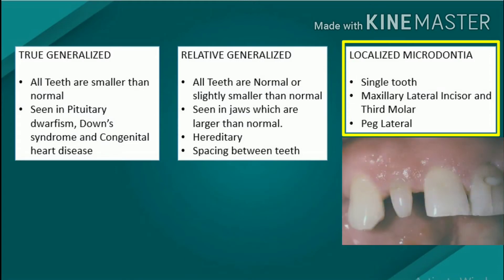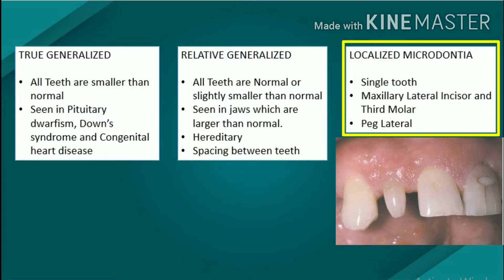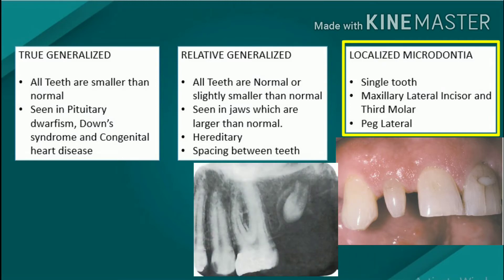Microdontia involving only a single tooth is a rather common condition. It affects most often the maxillary lateral incisor and the third molar. These two teeth are among those that are most often congenitally missing. One of the common forms of localized microdontia is that which affects the maxillary lateral incisor, a condition called the peg lateral.